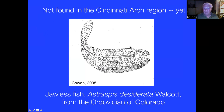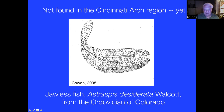Are there any true fish in the Ordovician? Yes — the title of our book applies mainly to the Cincinnati Arch tri-state region, not globally. From the Harding Sandstone in Colorado there is a reconstruction of a jawless fish from the Ordovician with dermal plates as forerunners of the bony fish skeleton, but no internal fish bone skeleton — an astrachoderm, a bottom feeder. Other material has been found in Bolivia and other parts of the world. They were present in the Ordovician, just not found in the Cincinnati Arch region yet.